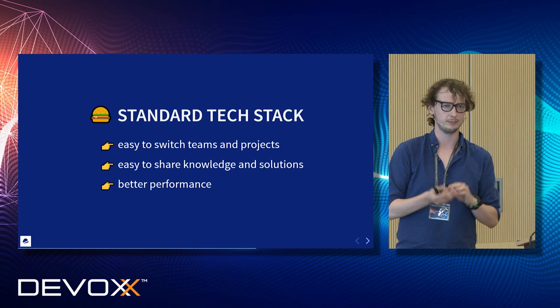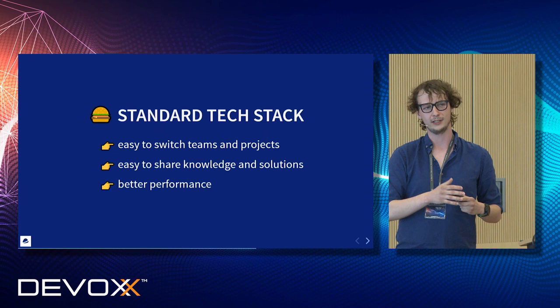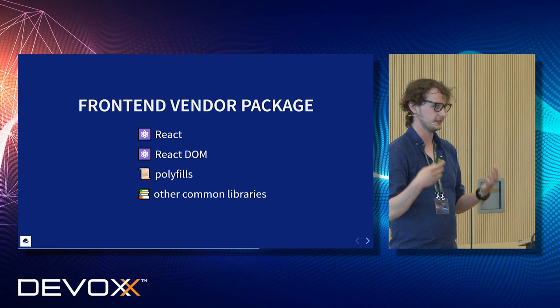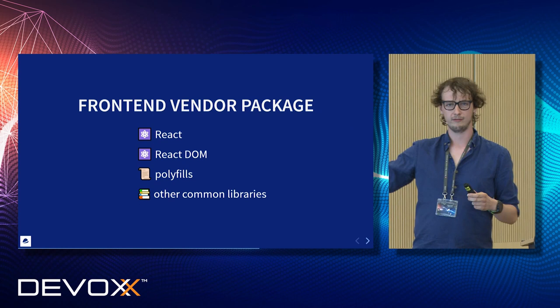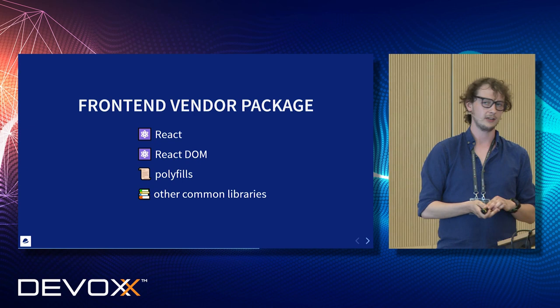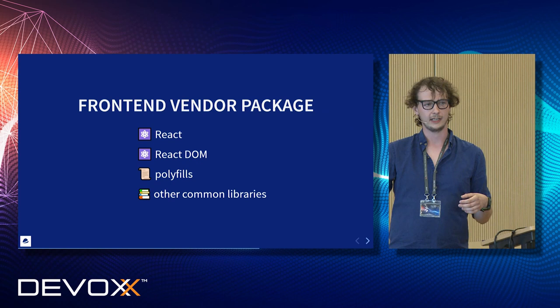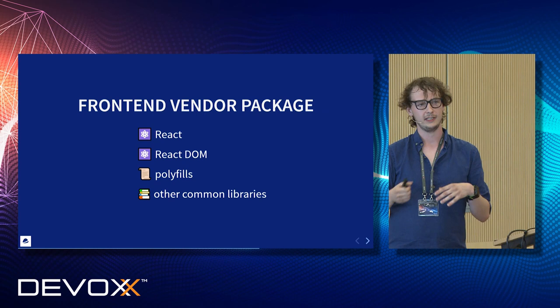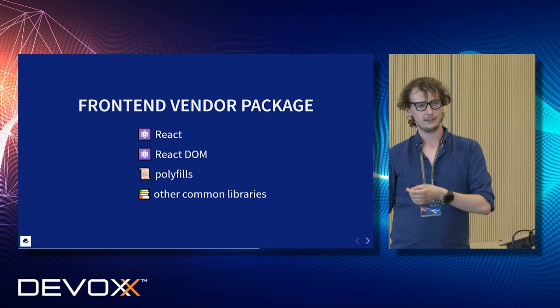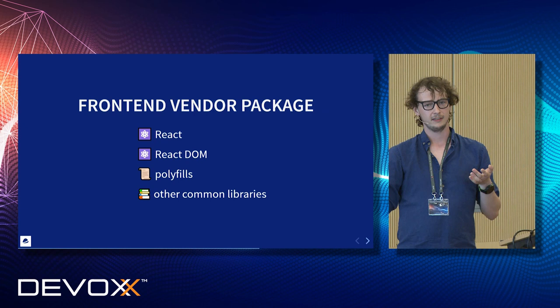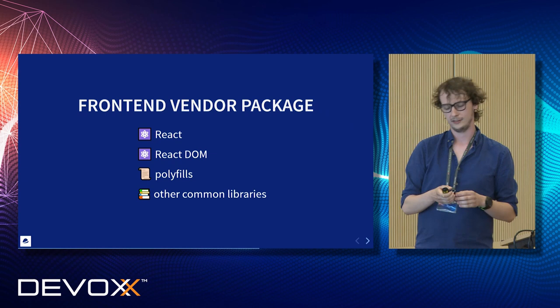Our developers can switch teams whenever they find convenient because there is no different technology requirement between teams. Also, the performance of our website benefits from this approach because we don't need to load each different library separately for our users — we only load React for them. We could, and actually did, go one step further by implementing something called a frontend vendor package. Within this package are all the standard libraries shared among all of our micro-frontends, such as React, React DOM, polyfills, etc. This library is loaded and cached for our user at the beginning of his journey on every page he comes to. So all of our micro-frontends are shipped with the assumption that those libraries will be provided externally — they don't contain those libraries within themselves, which greatly reduces their size and impacts performance in a positive way.